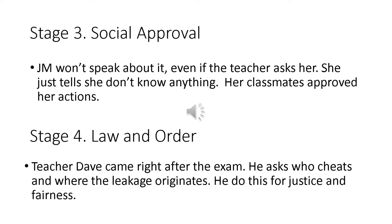Stage 3, social approval: JM wouldn't speak about it. Even when the teacher asked what happened, how it happened, and who originated the cheating, she insisted she didn't know anything. Her classmates approved of what she did — in the image of her class, she is a good friend who won't sell out her classmates. Her image among everyone was positive, except perhaps for the teacher.